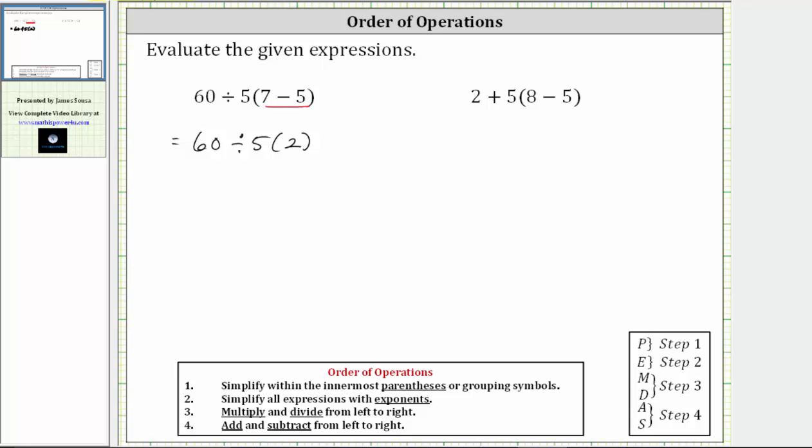Looking back at our expression, this means the next step is to perform this division. 60 divided by five equals 12. The expression simplifies to 12 times two. And of course, 12 times two equals 24. The expression simplifies to 24.